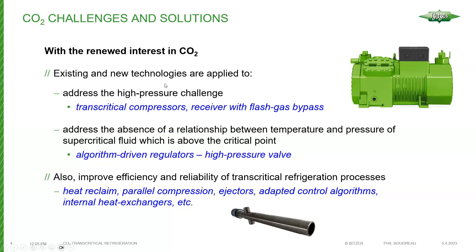In order to fully exploit CO2, existing and new technologies are applied to address the high-pressure challenge. We needed to develop transcritical compressors — basically high-pressure reciprocating compressors. Another technology that fits well in the CO2 transcritical world is the receiver with flash gas bypass. We also need to address the absence of a relationship between temperature and pressure of the supercritical fluid above the critical point — this led to what I call algorithm-driven regulators, called high-pressure valves, sometimes referred to as 'magic valves' in the industry. CO2 transcritical is not really considered efficient right from the start.